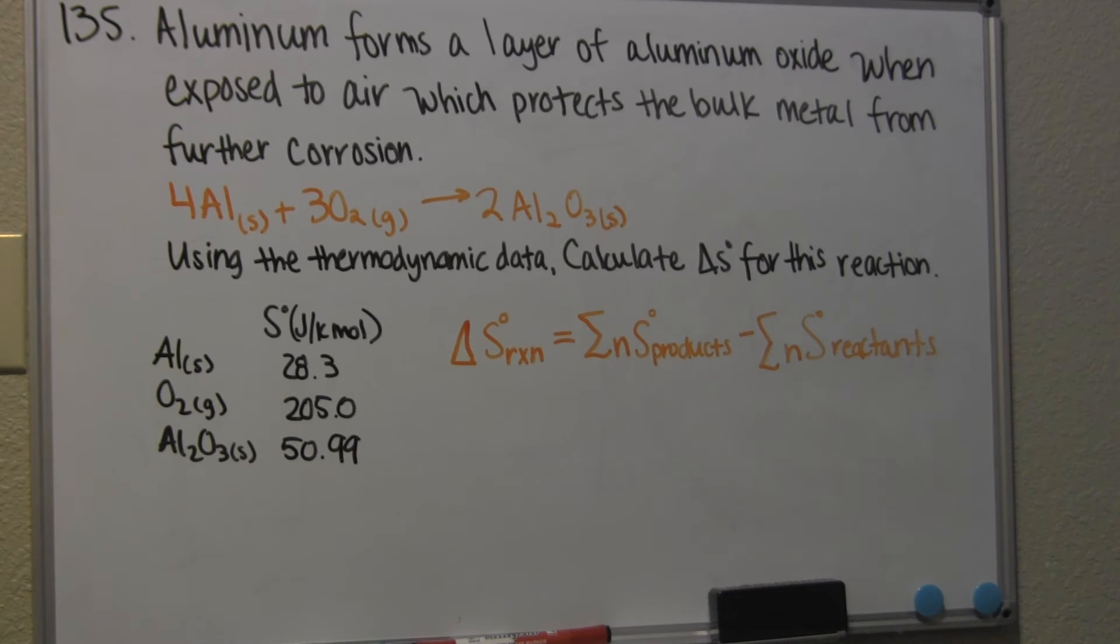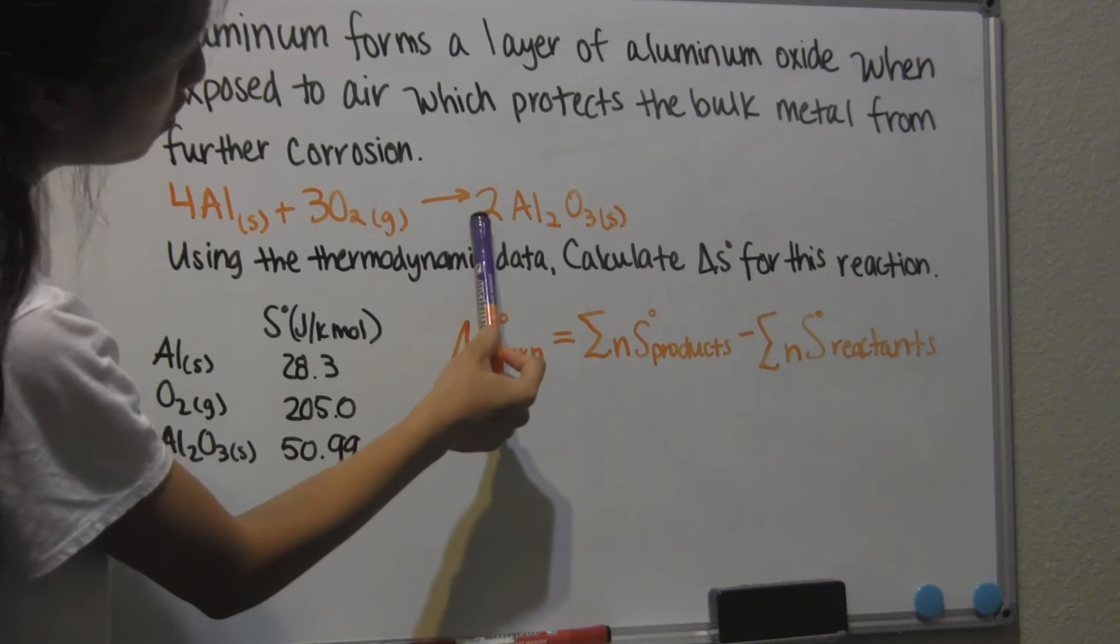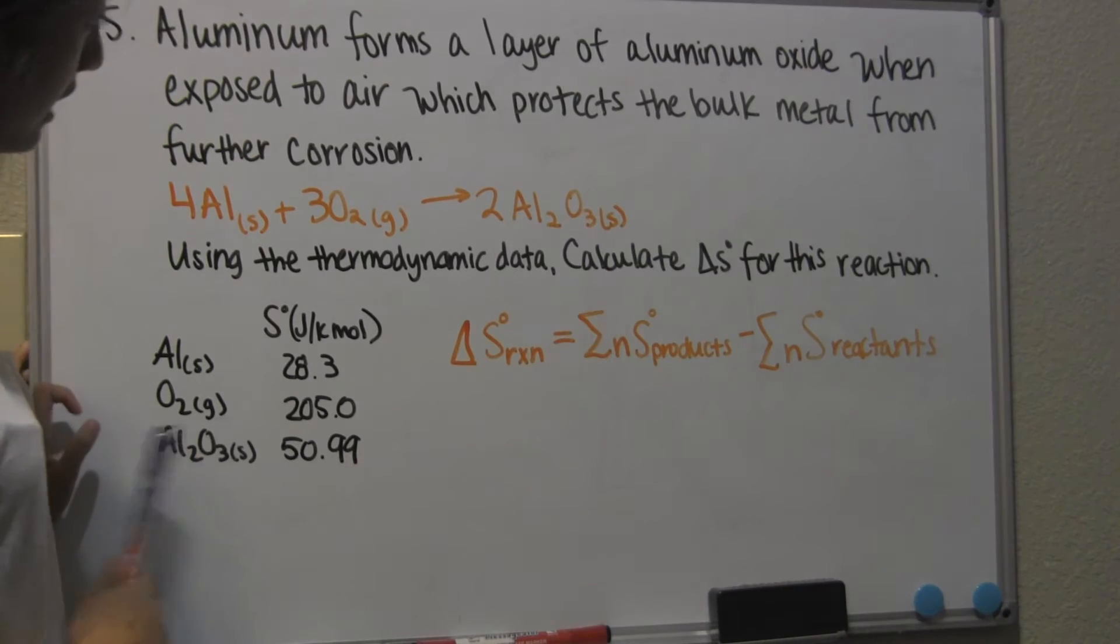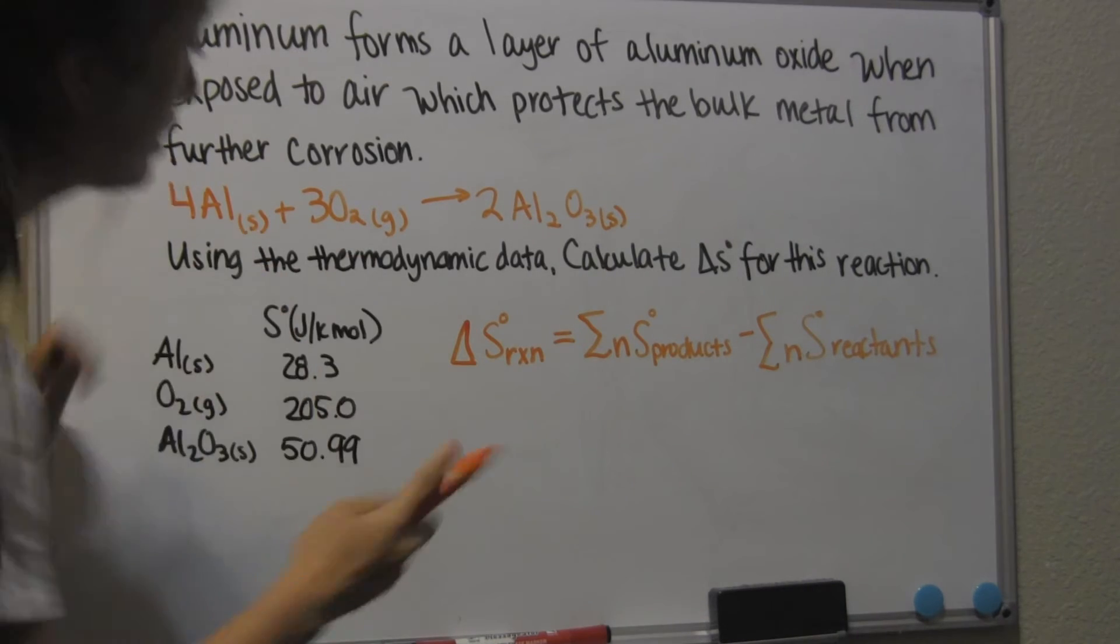And with this when you plug in the numbers, you're going to plug in the 50.99 times 2 since there are 2 moles of the aluminum oxide. Okay, so let me do that.